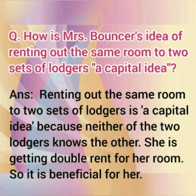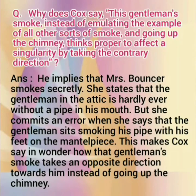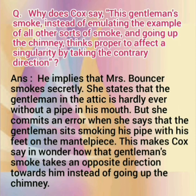Why does Cox say this gentleman's smoke, instead of emulating the example of all other sorts of smoke and going up the chimney, thinks proper to affect singularity by taking the contrary direction? He implies that Mrs. Bouncer smokes secretly. She states that the gentleman in the attic is hardly ever without a pipe in his mouth, but she commits an error when she says the gentleman sits smoking with his feet on the mantelpiece. This makes Cox wonder how the gentleman's smoke takes an opposite direction towards him instead of going up the chimney.